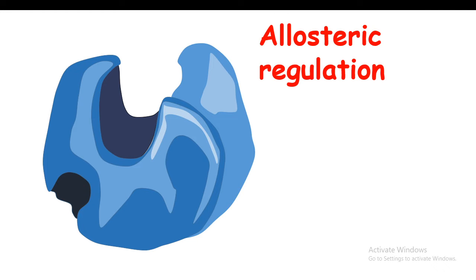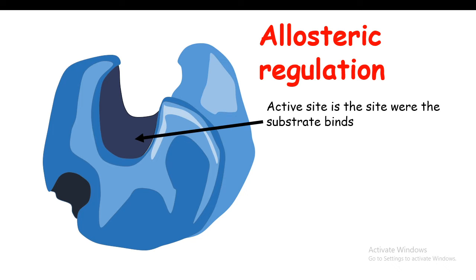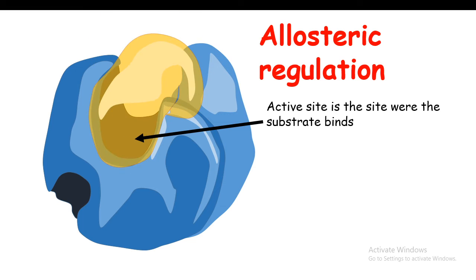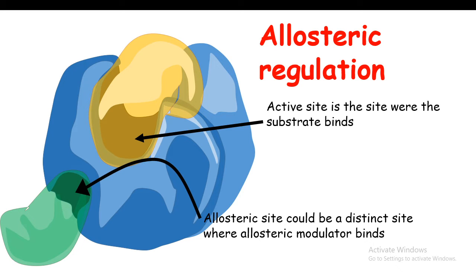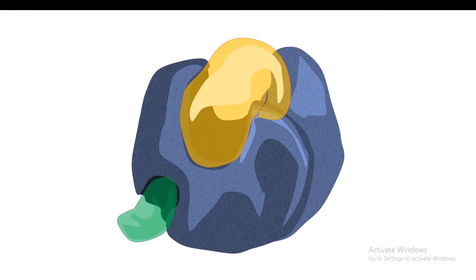In this video we are going to talk about the allosteric regulation of enzymes. We know that enzymes have an active site which binds to the substrate. Other than the active site, many enzymes have an allosteric site. This allosteric site could be a binding site for several modulators, which we term allosteric modulators. The allosteric site might also be the same as the active site in case of many enzymes.